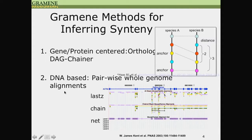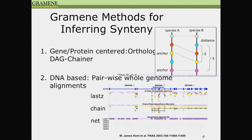In the second approach, which is DNA-based, we use an Ensembl-developed pipeline called pairwise whole genome alignment. This method is based on a paper from Kent and has three steps. The first step is LastZ alignment, a gap-based BLAST-Z algorithm that performs large-scale genome-to-genome alignment to detect sequence similarities between two genomes. This is followed by a chaining process, which connects and enlarges the homologous regions into bigger long-range blocks that show a co-linear order. The last step is NET, which clusters the chains and orders them.